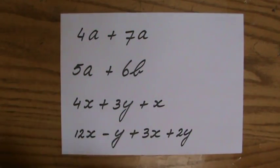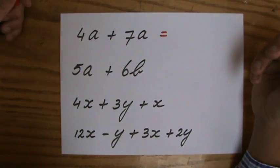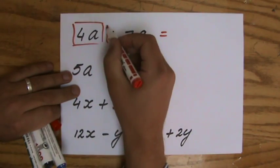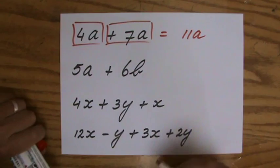So 4A plus 7A, if you like, 4 apples plus 7 apples, so I combine the like terms, 4A plus 7A, that is 11A.